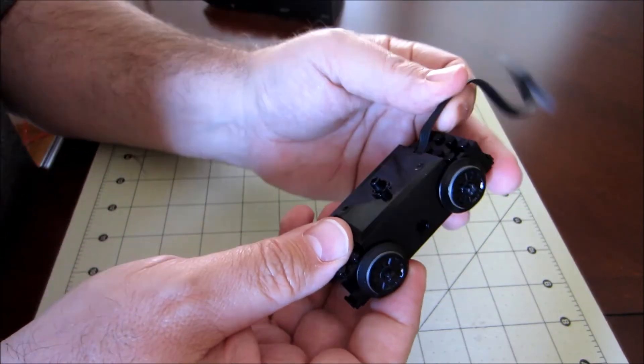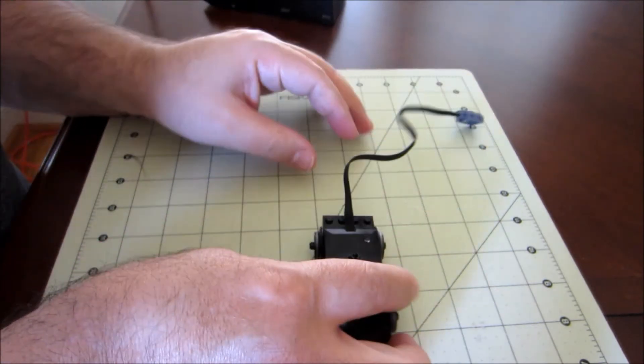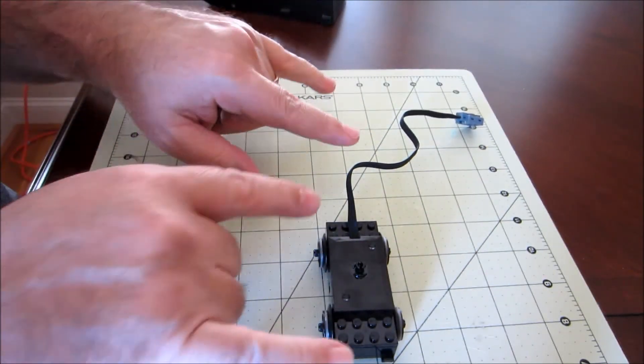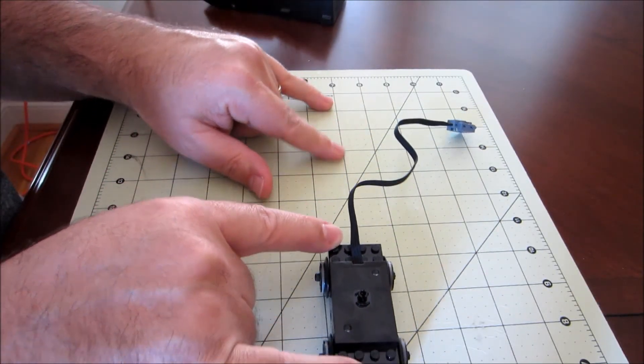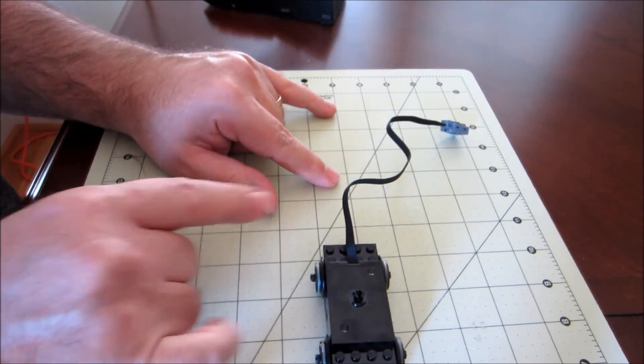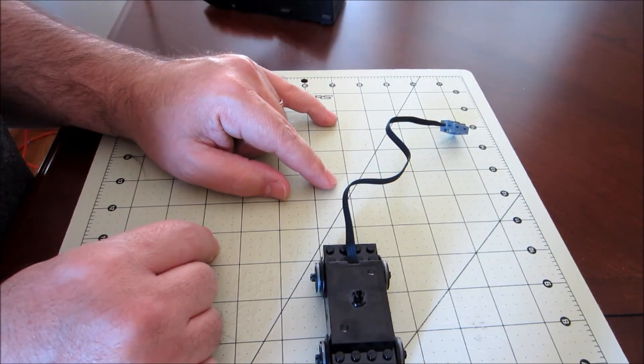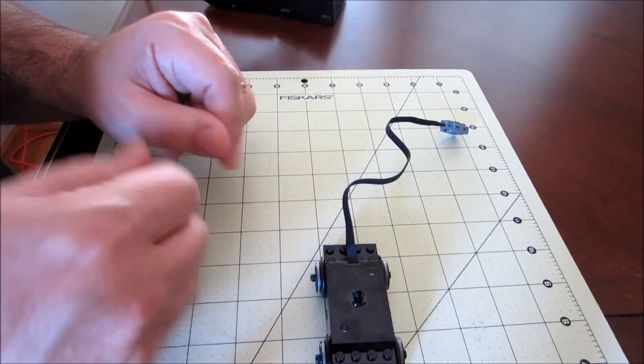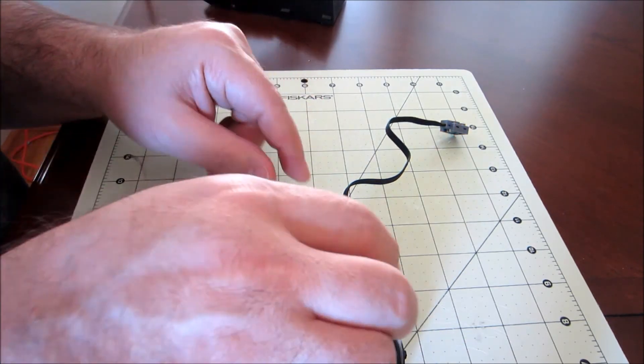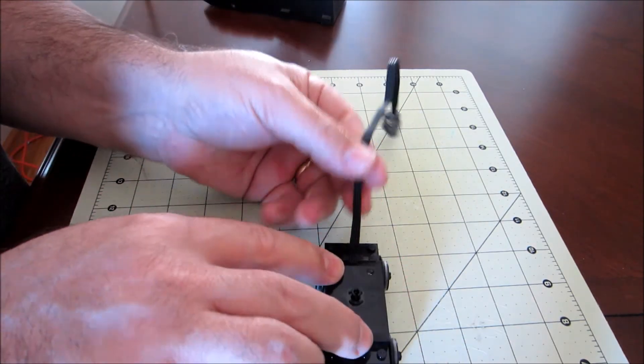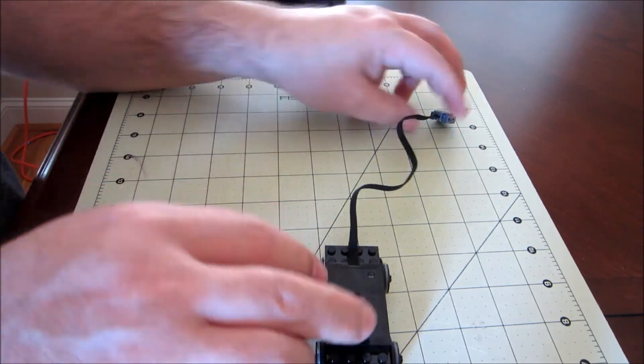But what this lets me do, like I said, it lets me put two motors that don't require the reversing switch. They'll be pointed in opposite directions, but they'll run in the same direction with the same control. I'll put them on the same channel for the remote control. So when I tell the train to go forward, both motors will go forward regardless of the fact that this one will actually be pointing in the opposite direction than the other one.